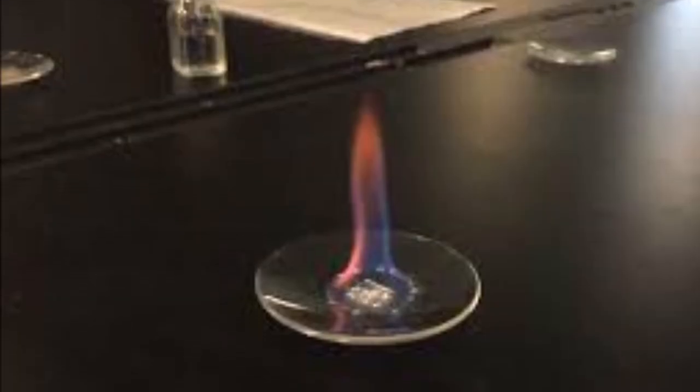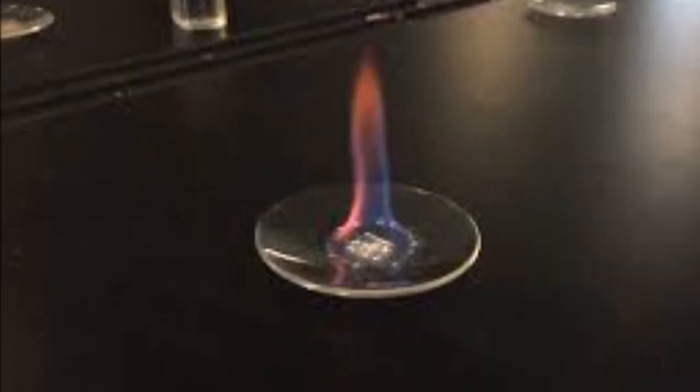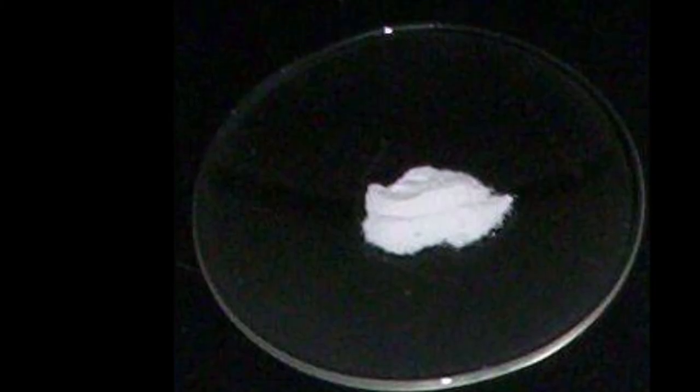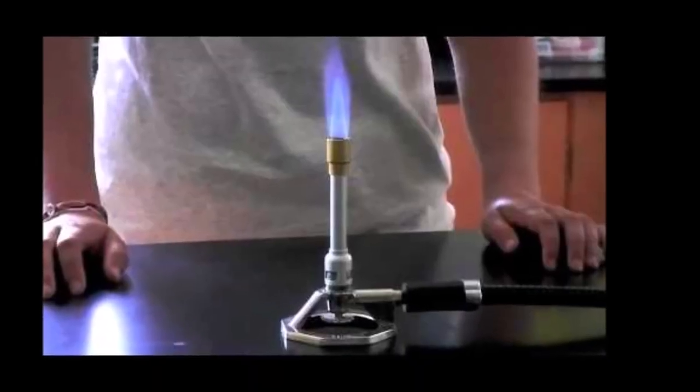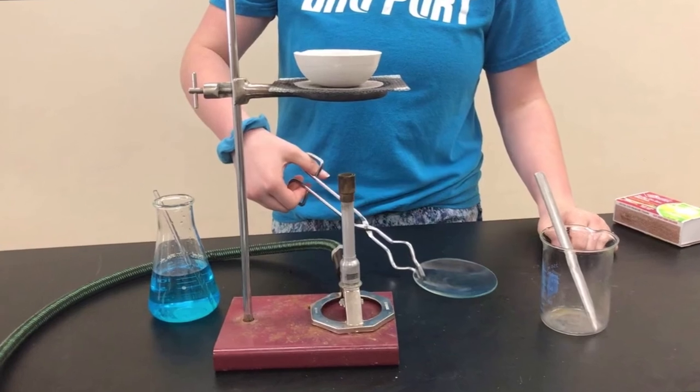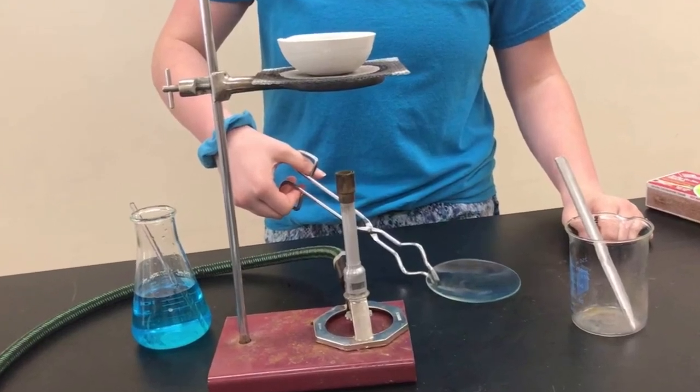The watch glass is used to evaporate a liquid, to hold solids while being weighed, or as a cover for a beaker. It is not advisable to subject the glass to a direct heat source like a hot plate or flame.